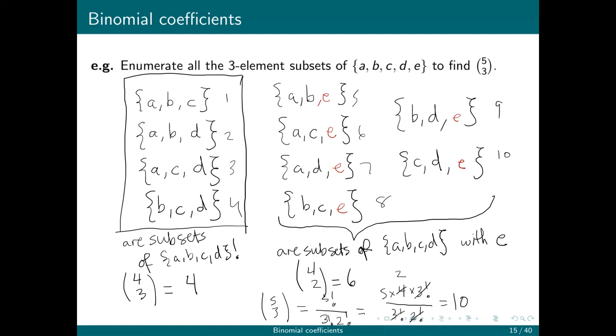So we can see here that five choose three is four choose two plus four choose three, which is exactly what Pascal's identity says it's going to be.